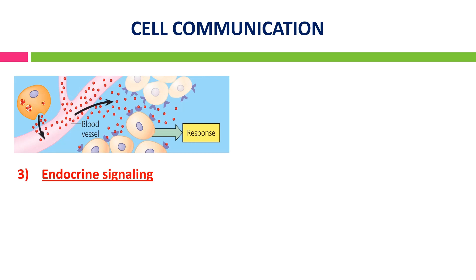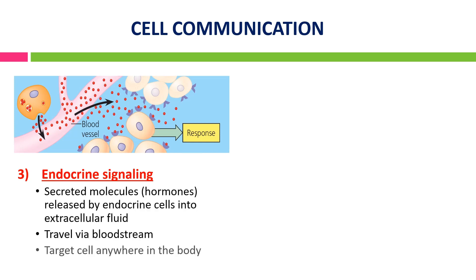The third type is endocrine signaling. When cells need to transmit signals over long distances, they often use the circulatory system as a distribution network. The secreted molecules, or hormones, released by endocrine cells into extracellular fluid travel via the bloodstream. The target cells can be anywhere in the body, but only those that can bind specifically to this hormone execute the response. Many endocrine cells are located in endocrine glands such as the thyroid gland, hypothalamus, and pituitary gland. One example is follicle-stimulating hormone (FSH) and luteinizing hormone (LH), released by the anterior pituitary gland in the brain and traveling to the gonads via blood.